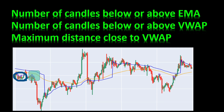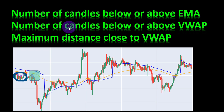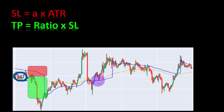In brief, this algorithm uses three adjustable parameters. The first two are the number of candles to be considered below or above the EMA, and the number of candles below or above the VWAP — these define whether we have a downtrend or uptrend, and they can be combined into one parameter if you want to simplify the algorithm. The third parameter is the maximum distance to consider that the price is close enough to the VWAP. For this video, the stop loss distance is directly related to the ATR, and the take profit is obtained by multiplying the stop loss by a certain ratio defined during optimization.